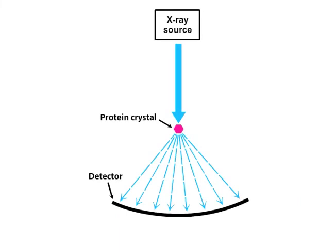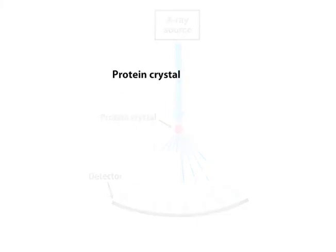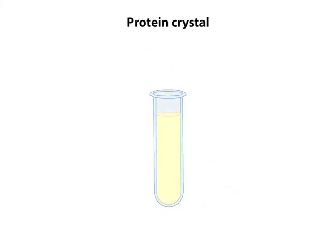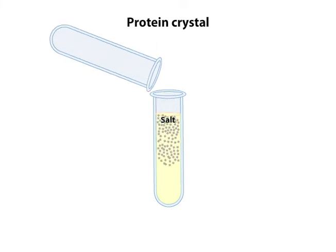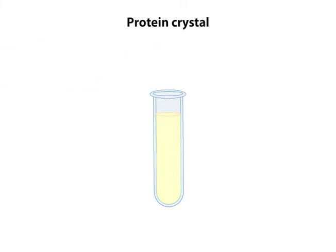Once an X-ray source is obtained, the next step is to prepare the protein crystal. Protein crystals are formed from a superconcentrated solution of the target protein. Adding ammonium sulfate, or another salt, to the solution decreases the solubility of the protein, causing the protein molecules to precipitate and settle out of solution.